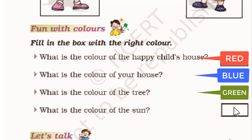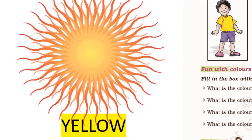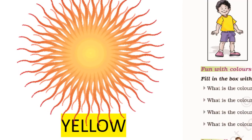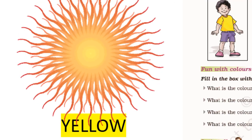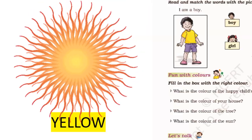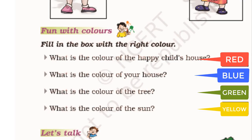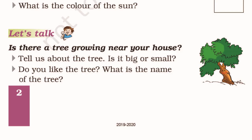Now what is the color of the sun? I will look at the picture, and in the picture I see the color of the sun is yellow. So I will color the box with yellow.